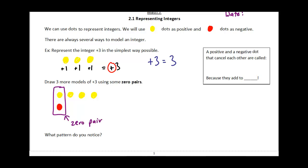One positive and one negative cancel each other out. If those two cancel each other out, then what are we left with? Well, we're just left with these three positives, which is +3. Whenever you have a positive and negative dot that cancel each other out, they're called a zero pair. That's just because they add up to zero.